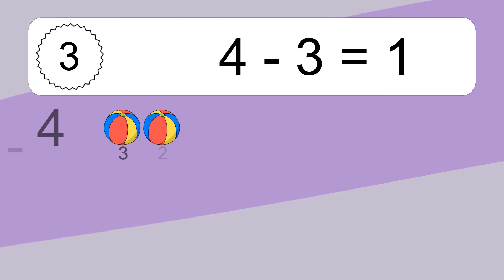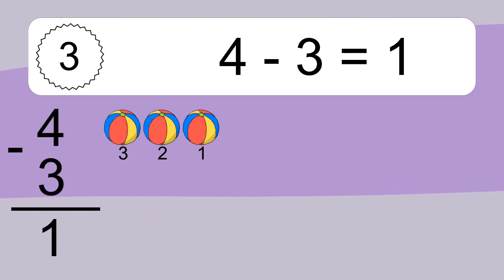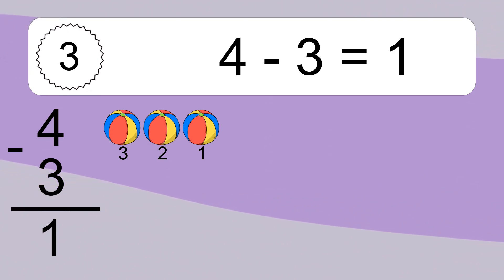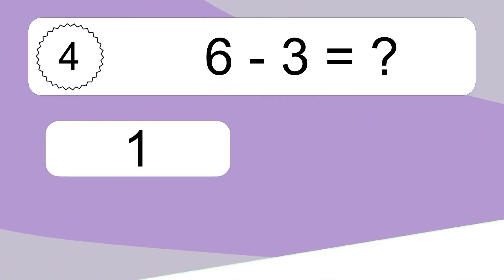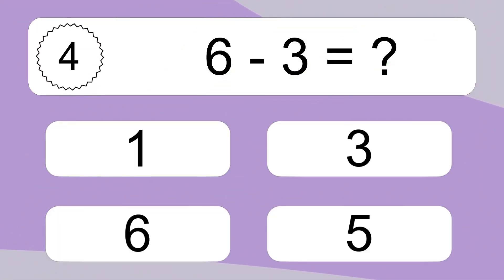4 minus 3 equals what? 4 minus 3 equals 1. Let's count it: 3, 2, 1.